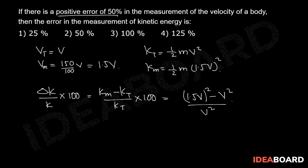by v squared into 100, which is equal to 2.25 minus 1 into 100, that is equal to 125 percent. So the right answer for the given question is option 4.